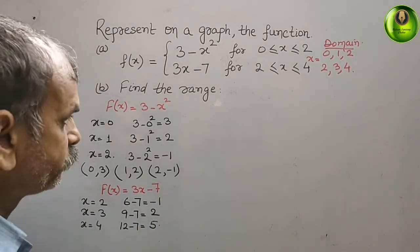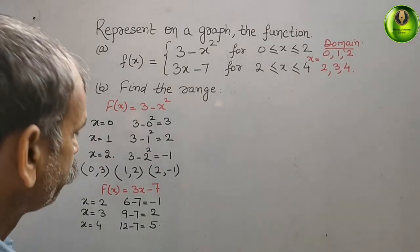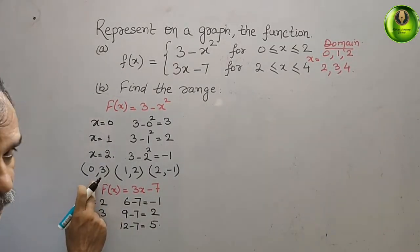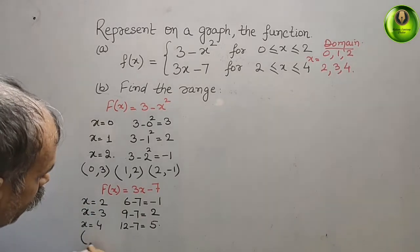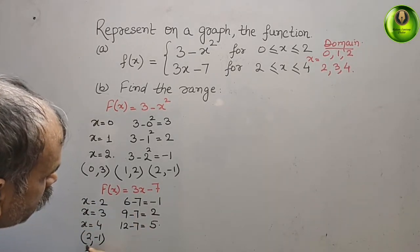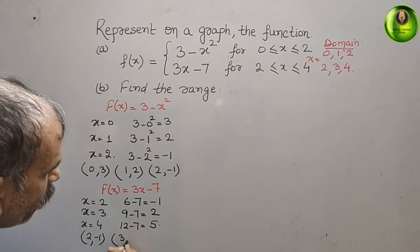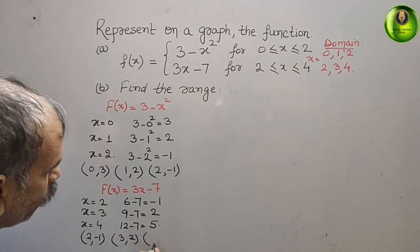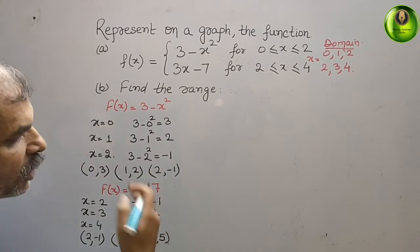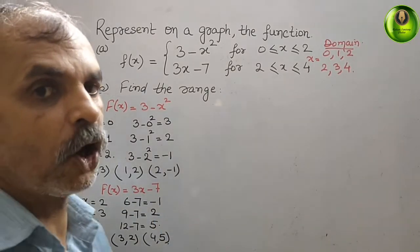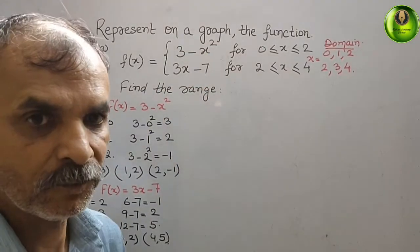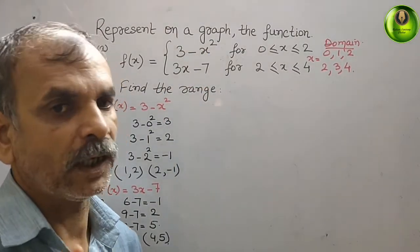Now write the coordinates for the second function: (2, −1), (3, 2), and (4, 5). These are the coordinates. Now we will draw a graph — they asked us to represent it on a graph, so we will draw the graph.